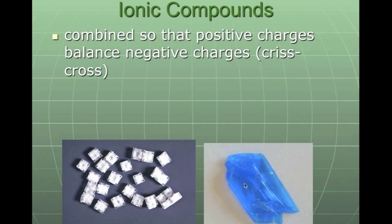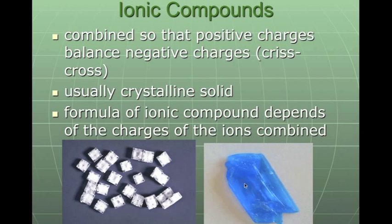An ionic compound combines so that the positive charges balance the negative charges, and this is a criss-cross method. Basically, in an ionic compound, the compound is going to be neutral. It's not going to have a charge to it. They form what we call a crystalline solid or crystalline lattice, and they form in a very specific shape. A formula for ionic compounds is going to depend on the charges of the ions and how they combine. In this criss-cross method, when we criss-cross, the number of positive charges and the number of negative charges will determine the formula.